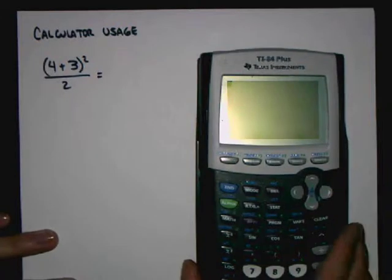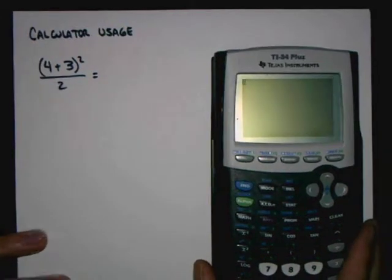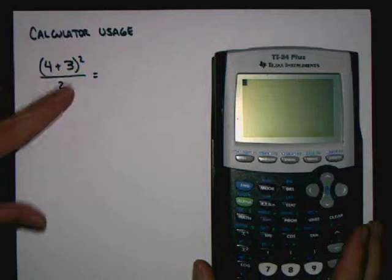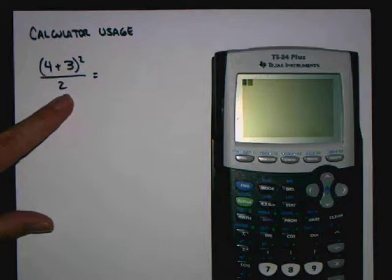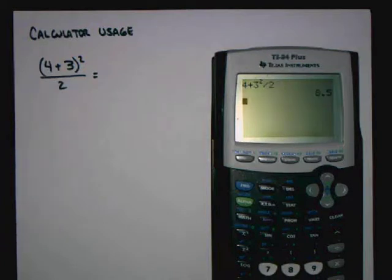One thing that a lot of people might do would be simply to enter these numbers into the calculator as they show up in the problem. So we might, for example, enter 4 plus 3 squared divided by 2. And when we do that, we get the answer 8.5.